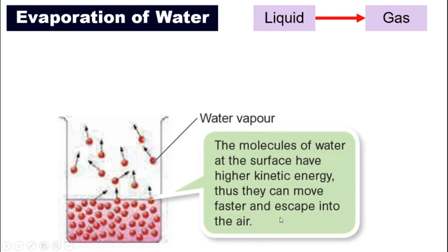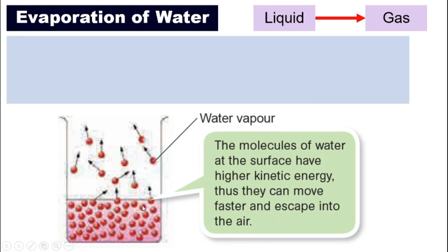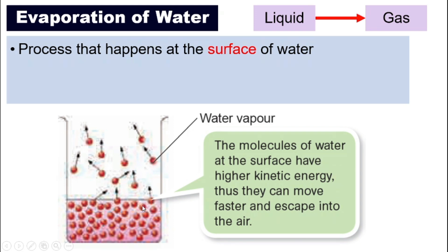Let's take a look at this diagram here. Evaporation is a process that happens at the surface of water. Another process that turns liquid into gas is called boiling. Boiling does not happen only at the surface — it happens to the whole liquid in the container, whereas evaporation only happens at the surface of water.